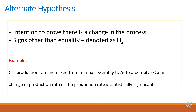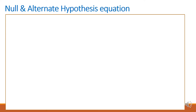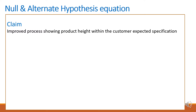Let's look at another example: an improved process showing product height within the customer's expected specification — that is, a product height issue which has been improved, now within customer specification. We can prove this using a standard hypothesis. The null hypothesis assumes there is no change in product height — that the physical changes observed are just sample variation.